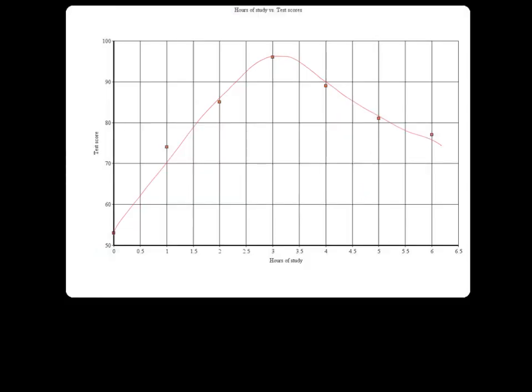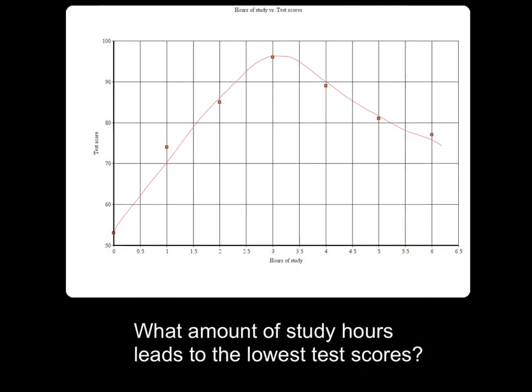What if you were asked about the amount of study hours that lead to the lowest test scores? Are you looking for a slope, or are you looking for a certain point on the graph? Well, since we are looking for a specific amount of study hours, this will probably correspond to one spot along the x-axis. This is a good indication that we need to find a point rather than a slope. Since the test proficiency is lowest at this point here, that means that 0 hours of study lead to the lowest test scores. The fact that your slope seems to be increasing on this side of the graph does not change that answer.